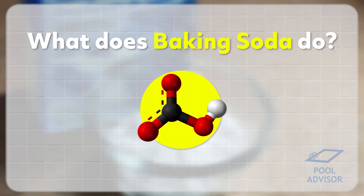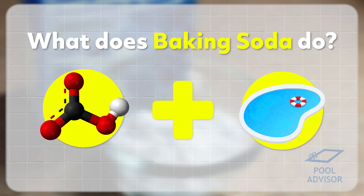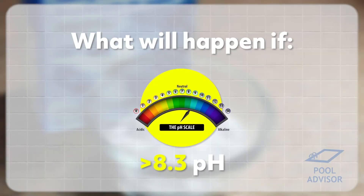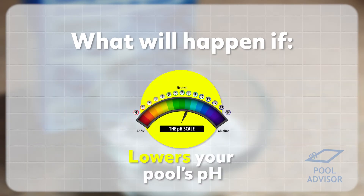Unlike some other chemicals like soda ash, sodium bicarbonate adds the bicarbonate form of alkalinity to your water, which means it has a natural pH of about 8.3. That isn't very high and isn't too far from where pool water normally sits. This is unlike soda ash, which has a much higher natural pH. If your pool water had a pH greater than 8.3, adding baking soda would actually lower your pool's pH, which is quite interesting.